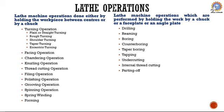Lathe is used for various operations — it is a very versatile machine. With different kinds of tools it is helpful for turning, facing, chamfering, knurling, thread cutting, filing, polishing, grooving, spinning, spring winding, and forming operations. With the tool positioned at the dead end, you can also perform drilling, reaming, boring, counter boring, taper boring, tapping, undercutting, internal thread cutting, and parting operations.